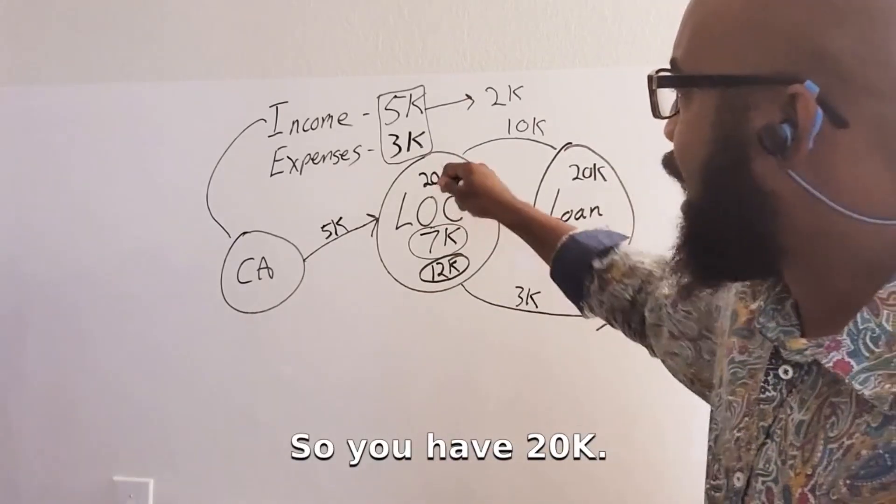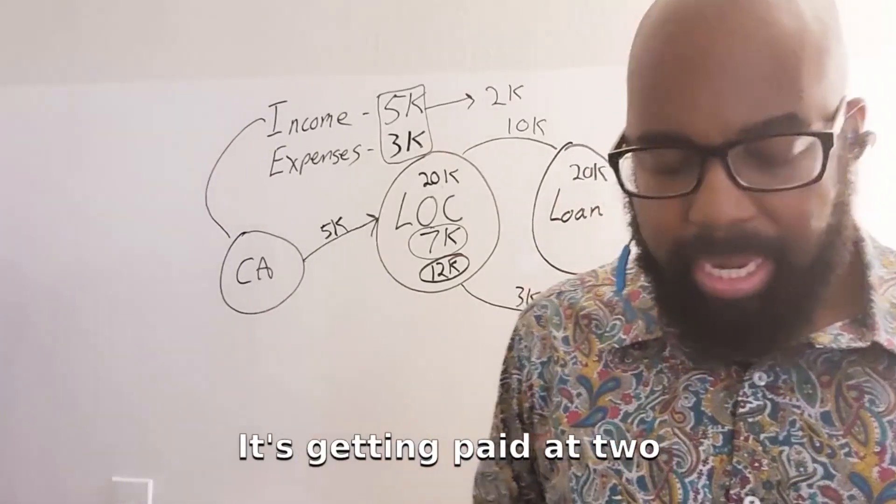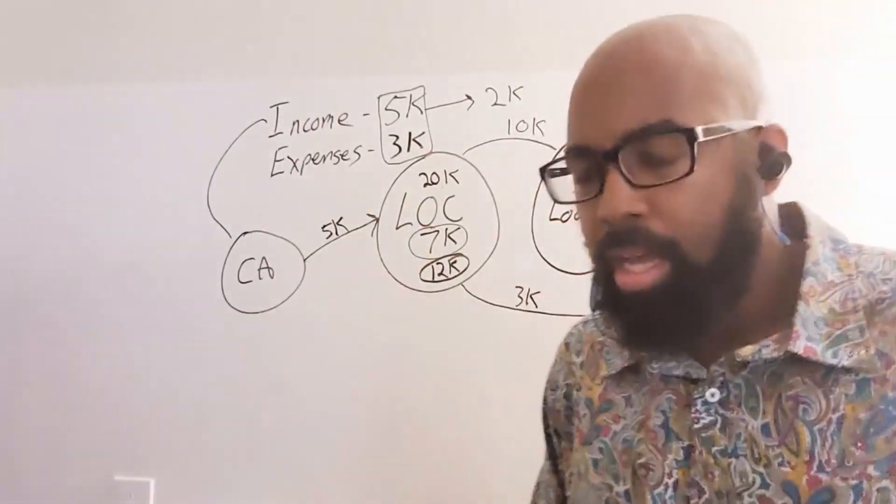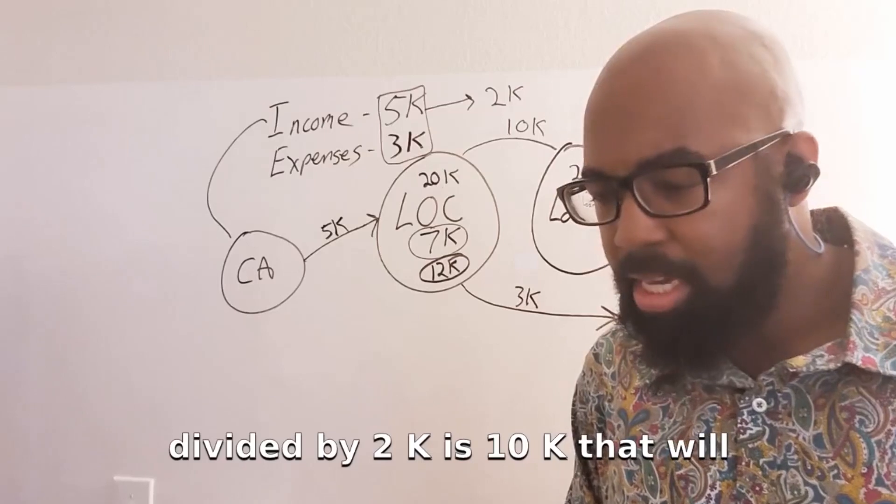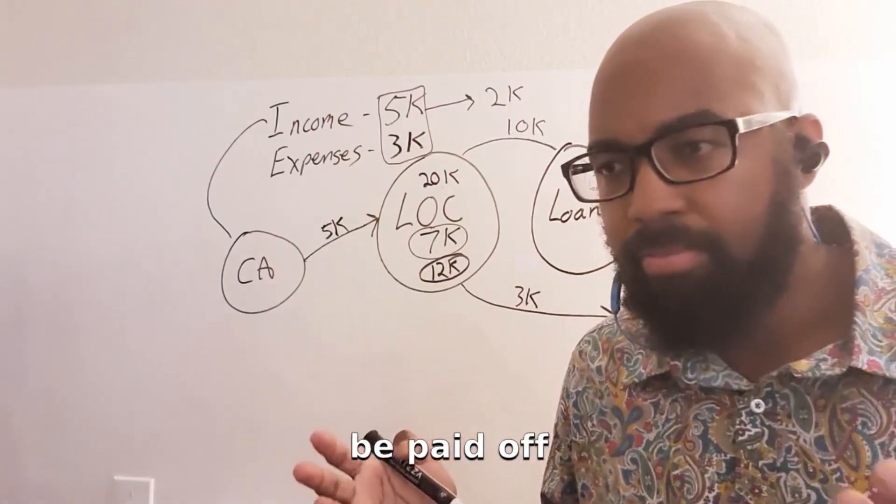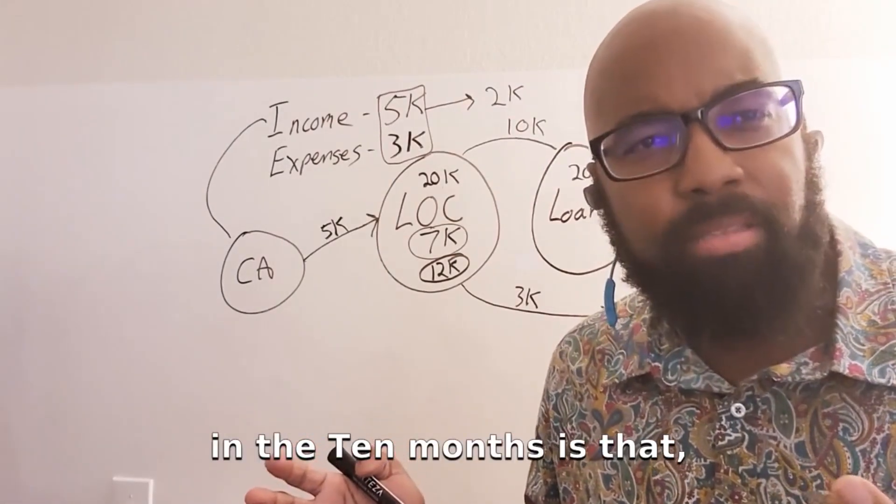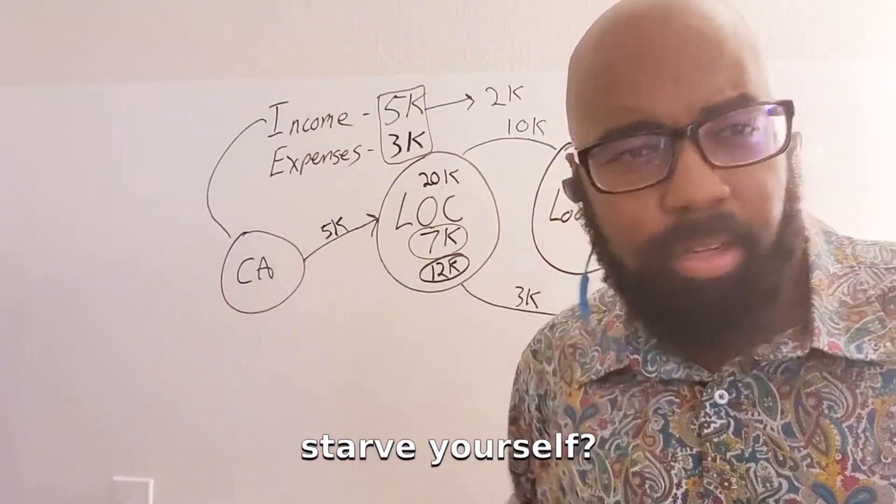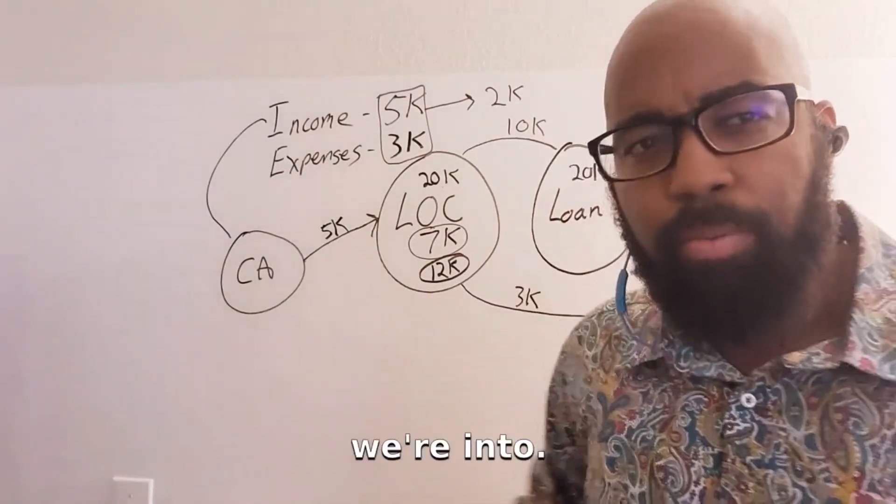So you have 20K. It's getting paid at $2,000 each month. 20K divided by 2K is 10K. That'll be paid off in about 10 months. Is that all right? And you didn't even have to starve yourself. So that's what we're into.